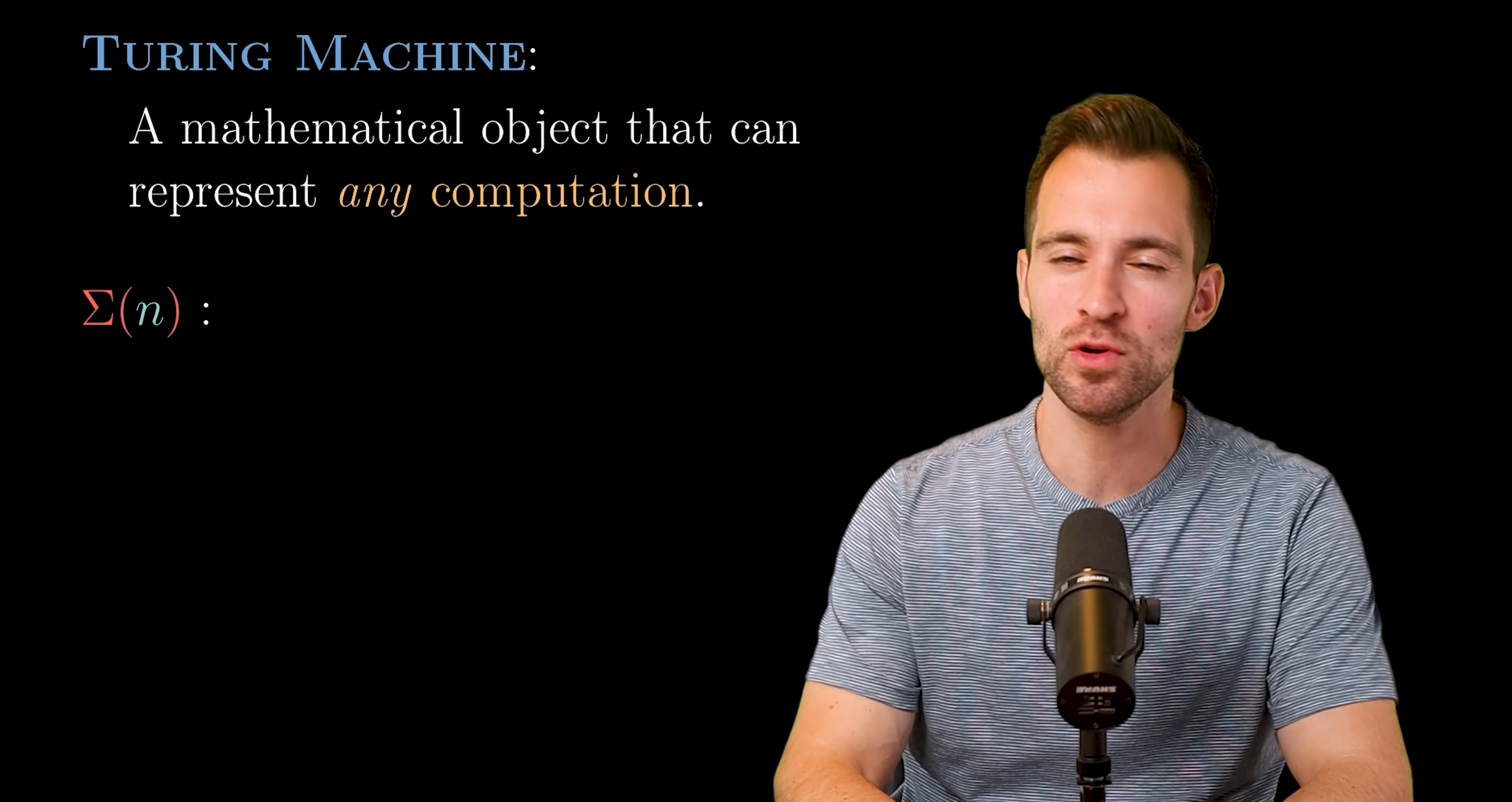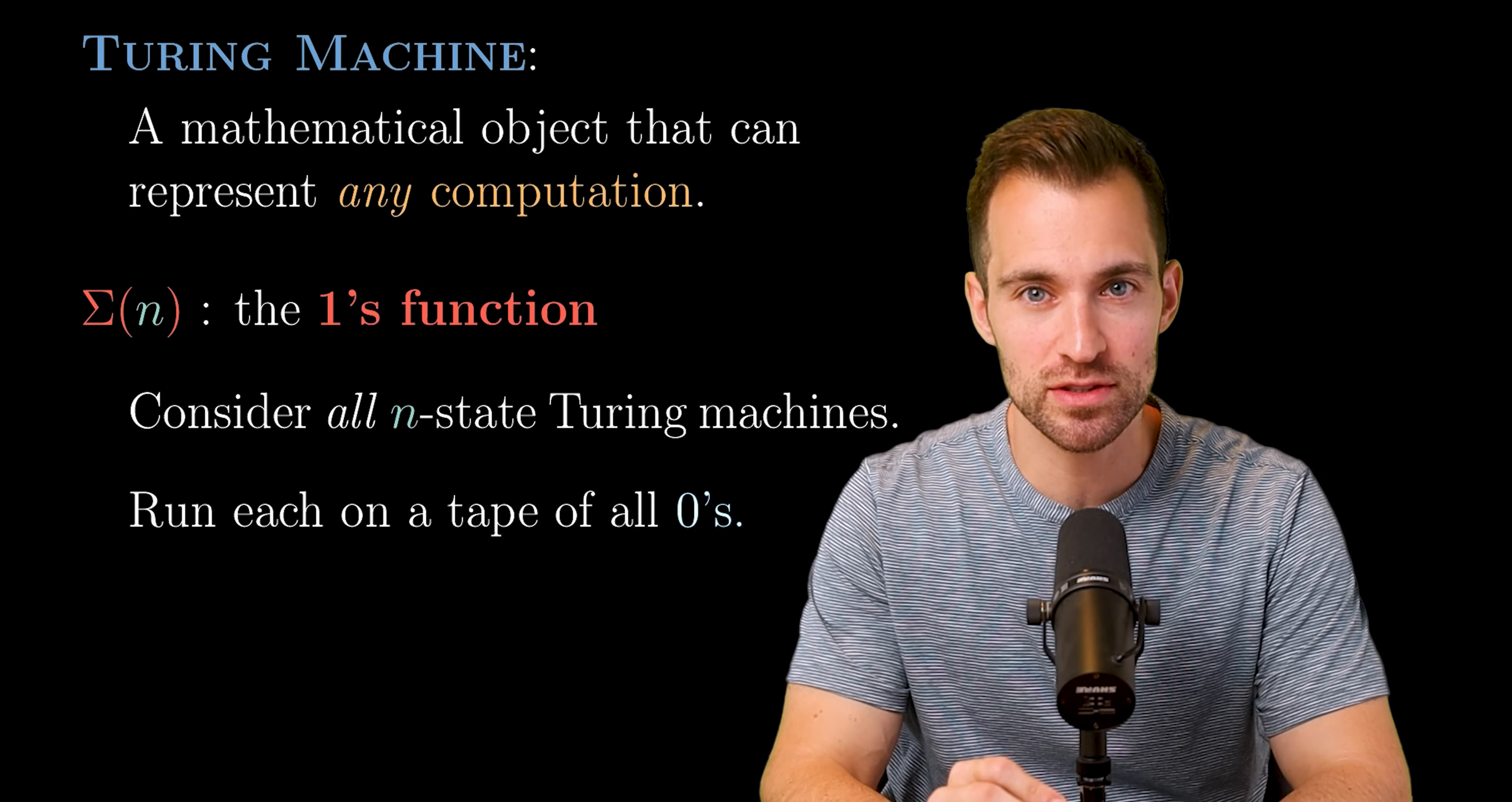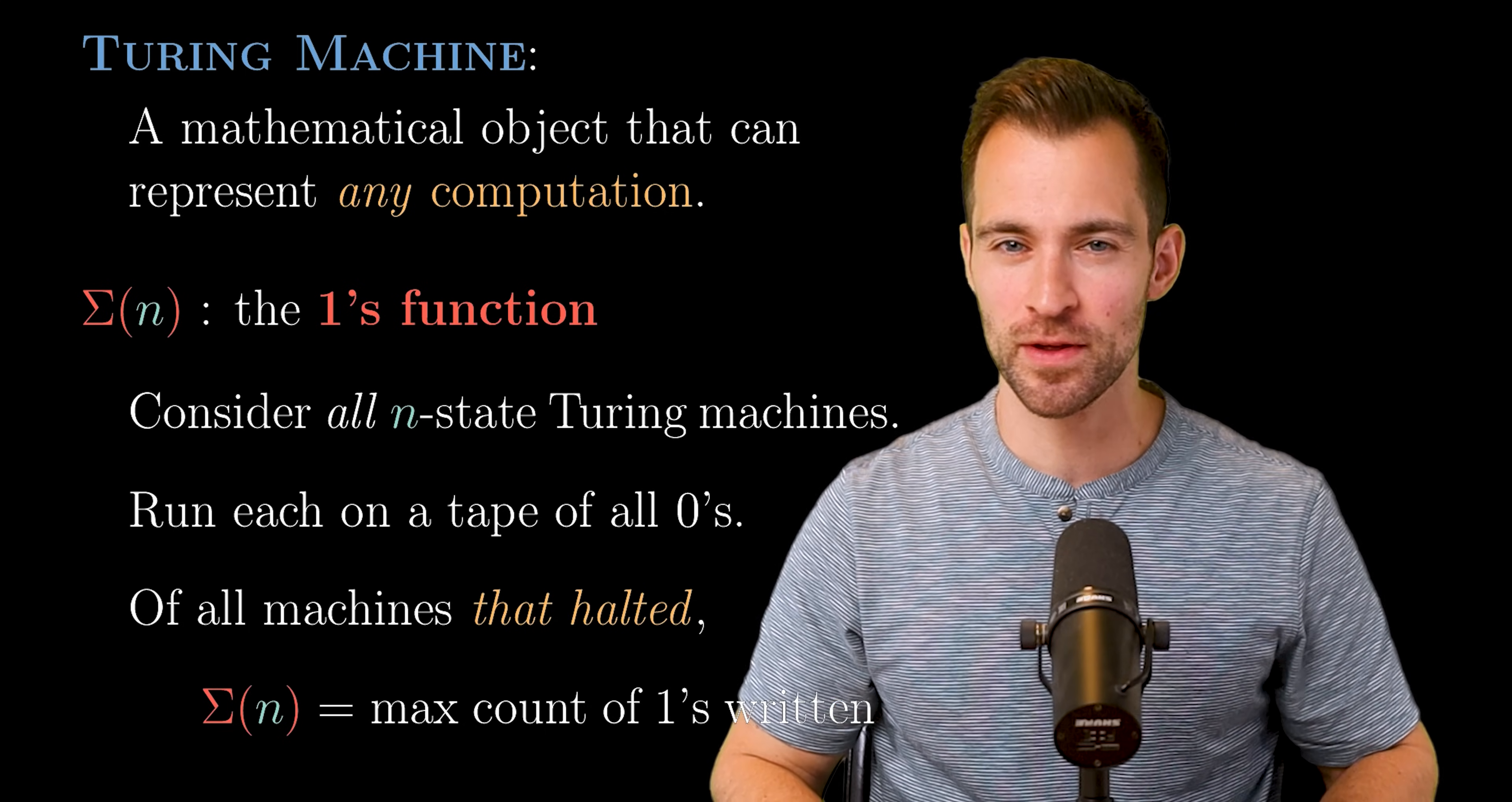Now let's restate sigma n, which I'll now call the ones function instead of the busy beaver function. You'll see why later. We start by considering all n-state Turing machines. So for a given n, that's many machines to consider. Then we run each on a tape of all zeros. Now we define. Of all machines that halted, sigma n is the max count of ones written. And this, as we saw, is a wild function that computation itself cannot touch.